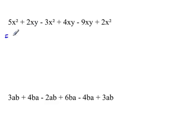So we're going to first of all collect all the x squareds together. So this is 5x squared minus 3x squared plus 2x squared.